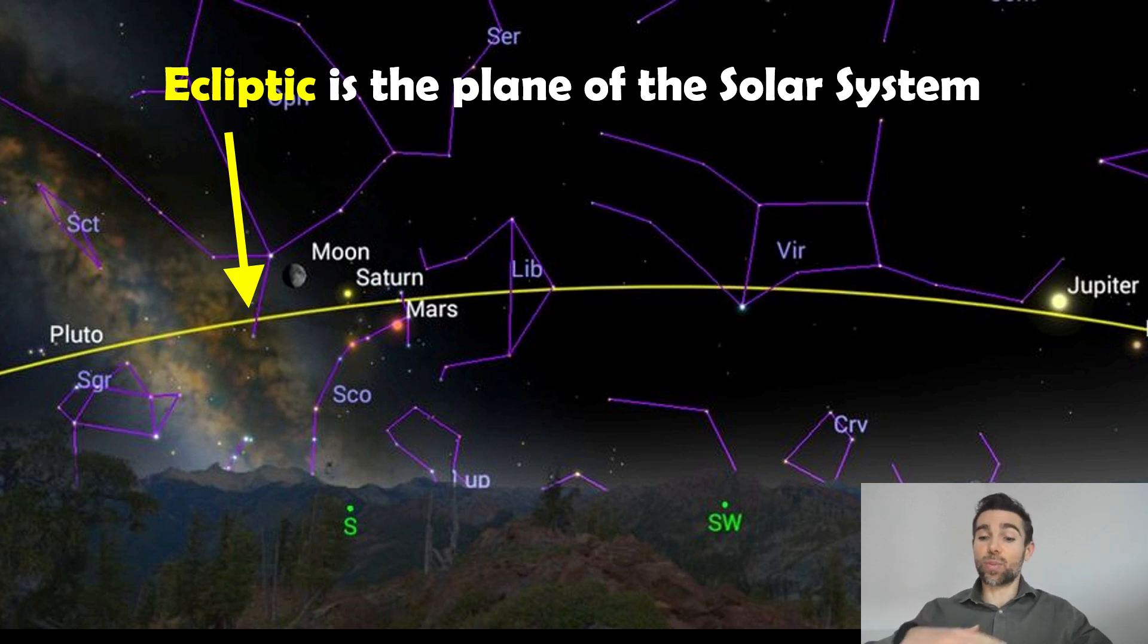Because the plane of the solar system is the ecliptic, and all of those planets are in the plane of the solar system.